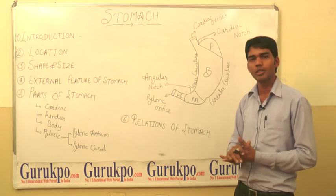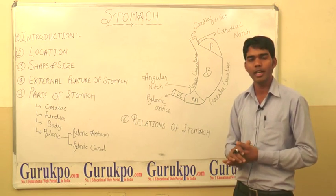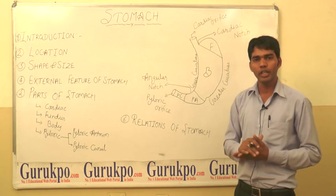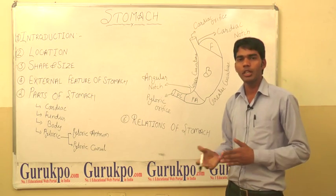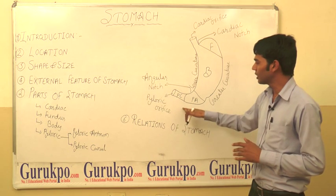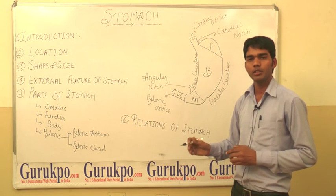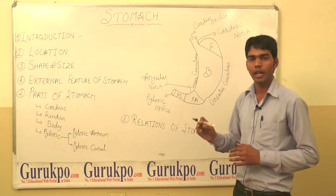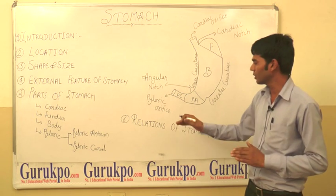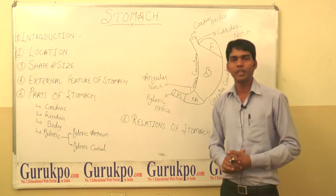On the superior side of the stomach, the stomach is related to the diaphragm, esophagus, and left lobe of the liver. On the inferior side, the stomach is related to the transverse colon and the small intestine.